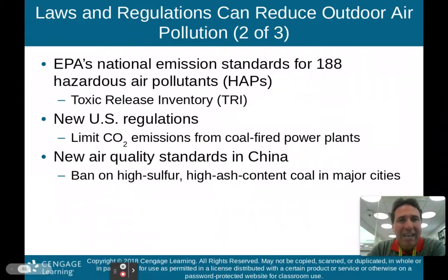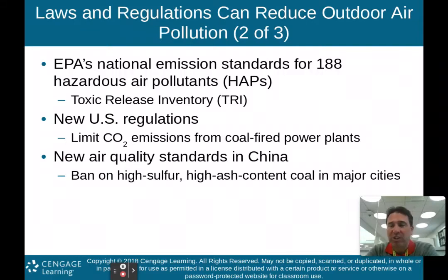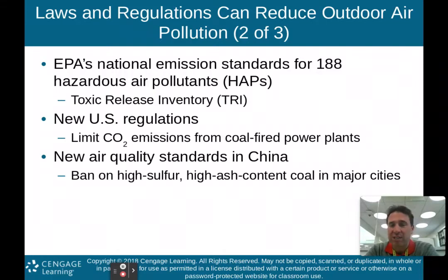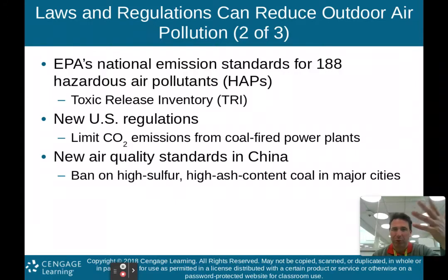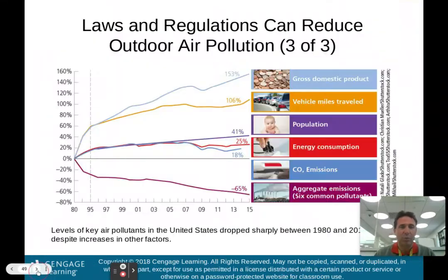The EPA has also set national emission standards for 188 hazardous air pollutants, called HAPs. There's also a Toxic Release Inventory (TRI) which the EPA uses to help track some of these toxic chemicals. We do have new U.S. regulations limiting the amount of carbon dioxide emissions from coal-fired power plants. And China has enacted some new air quality standards as well — they're banning high-sulfur and high-ash content coal in major cities. They're still burning coal, but switching to low-sulfur coal, which is at least a little bit cleaner. Baby steps, but at least we're moving in the right direction.